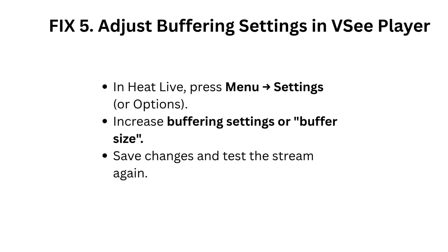Fix 5: Adjust buffering settings in VC Player. In HeatLive, press Menu, then Settings or Options. Increase the buffering settings or buffer size. Save changes and test the stream again.